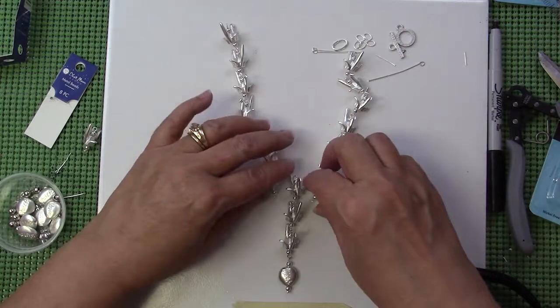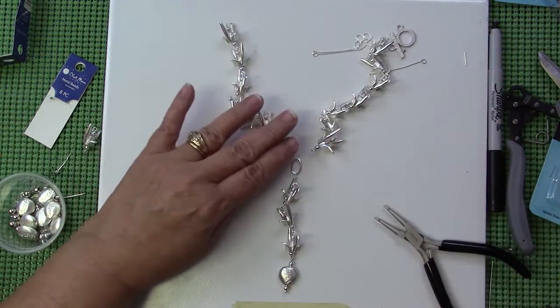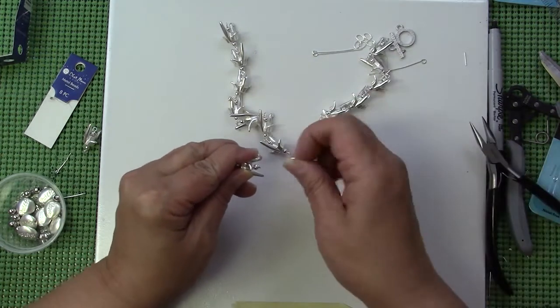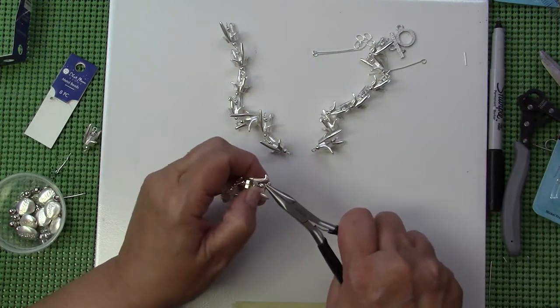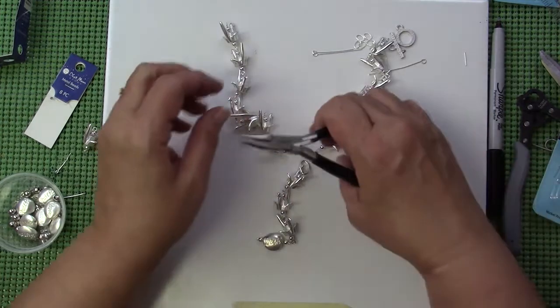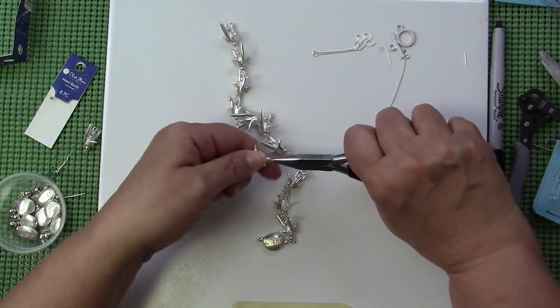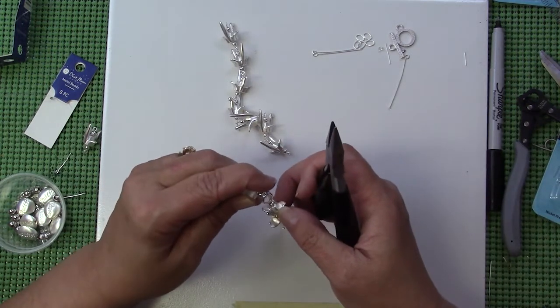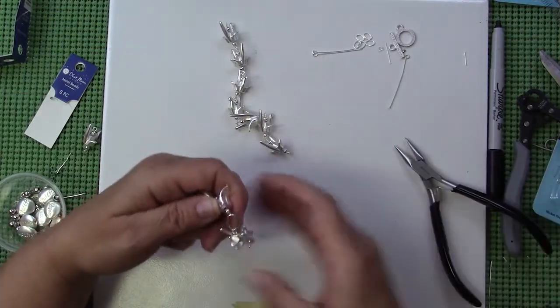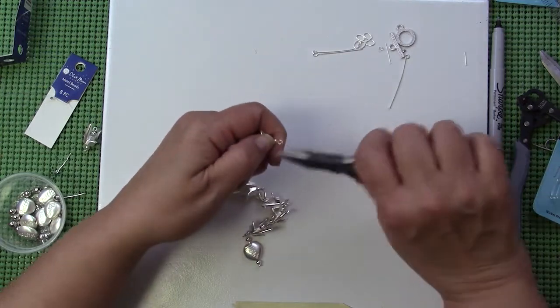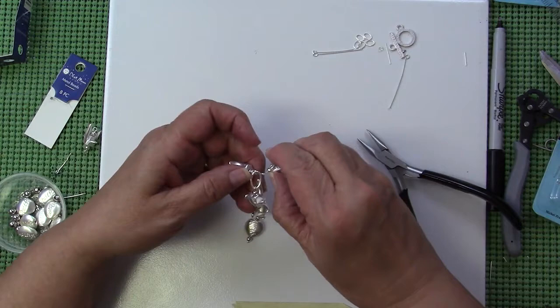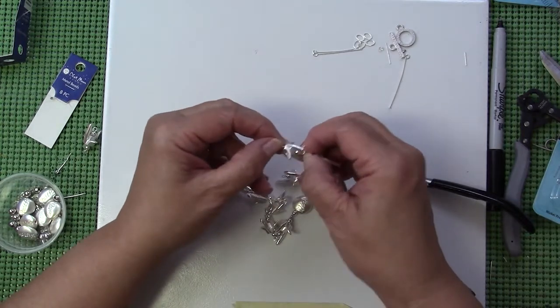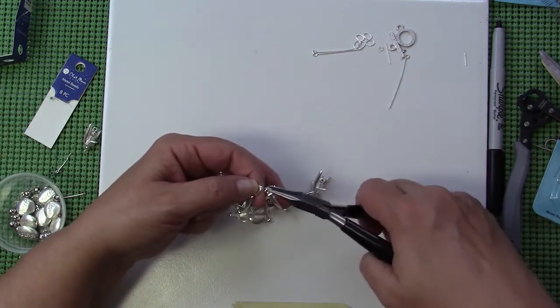Then I will take the larger oval jump ring and you can see how that's going to come together. I'll just open up the loop on the drop and thread on the oval jump ring, close the loop and then I will add each side and close that last piece up.